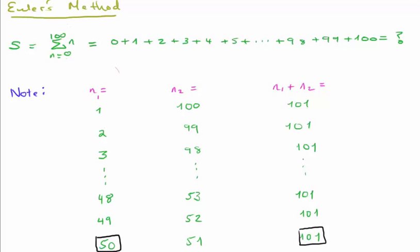Firstly, let's look at Euler's method. We can write the problem of summation using the summation notation here. So we're summing from n equals 0 to 100 of n, and we can write that as 0 plus 1 plus 2 all the way up to 100.